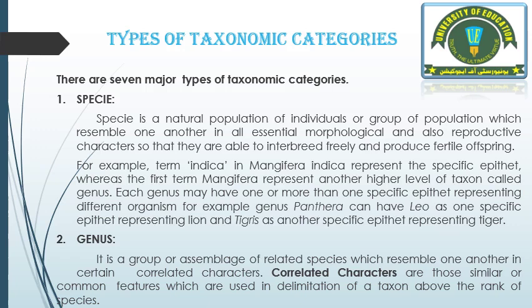Number two is genus. Genus is a group of related species which resemble one another in certain correlated characters. Correlated characters are those similar or common features used in delimitation of a taxon above the rank of species. In genus, many species that resemble each other are included due to correlated characters, and genus has much more variety of species than a single species.